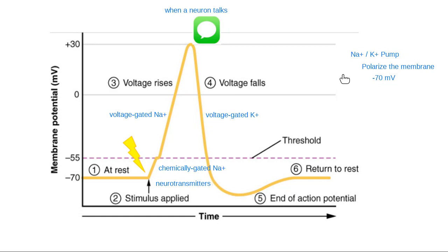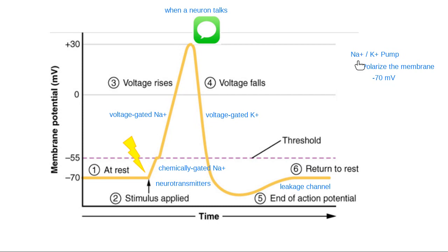Then I'll use the sodium-potassium pump to restore my balance and get back to normal, along with leakage channels. Two kinds of channels help here at the end: leakage channels where I kind of leak back toward normal, and the sodium-potassium pump helping me go from being too negative back to resting membrane potential.